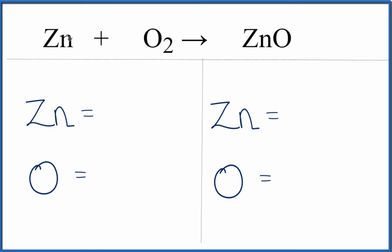So let's count the atoms up. We have one zinc and two oxygens. Over on the products, we have one zinc and one oxygen.